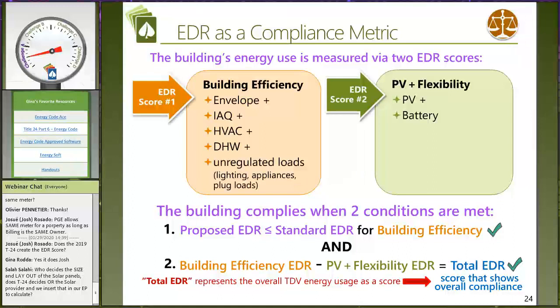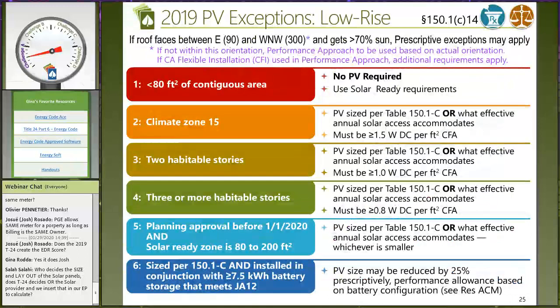The required PV number is based on conditioned floor area, climate zone, and number of dwelling units. This means an ADU as a separate report will factor into PV sizing. For multi-family it counts the number of dwelling units. The key question for energy consultants is: what do we need to know about the PV system — its kW sizing — when doing the reports? What types of exceptions exist, and what are the alternative approaches to sizing?